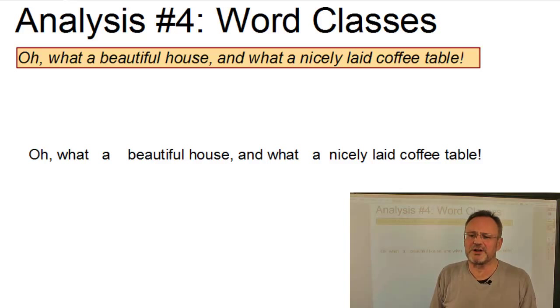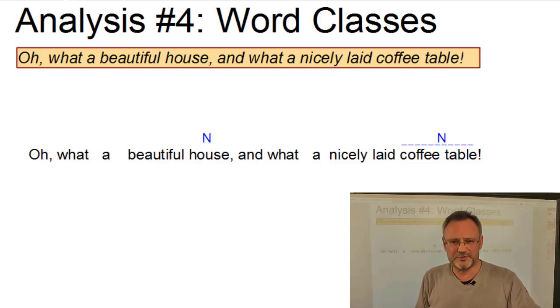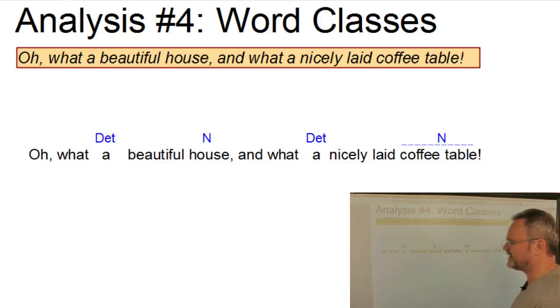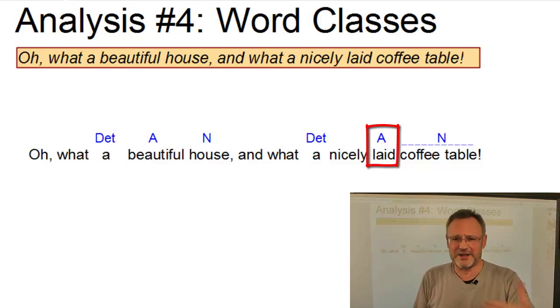Let us first of all assign the word classes to all the words in our sentence. We have two nouns, house and coffee table. Well, coffee table, of course, is a compound noun with table as a head, but the whole thing on a syntactic level is one noun. Both are introduced by the determiner A and are preceded by an adjective in each case, beautiful and laid, where laid is a de-verbal adjective, an adjective that has been derived from a verb.